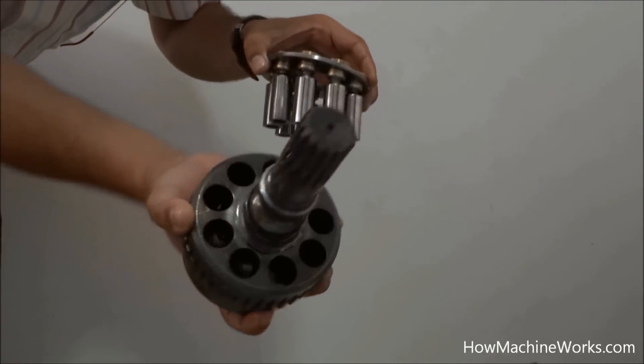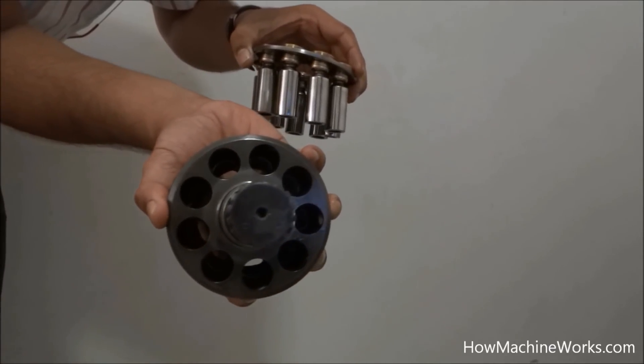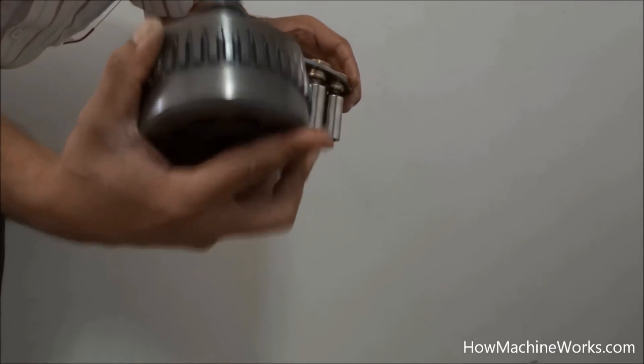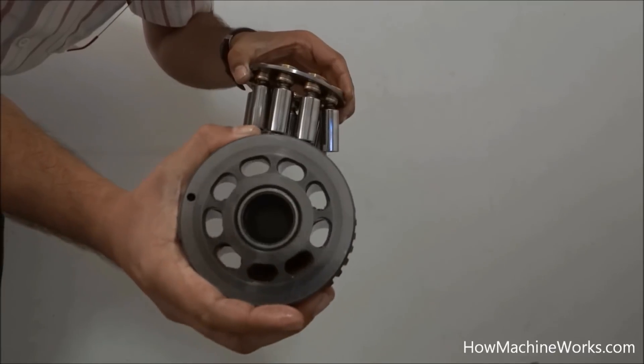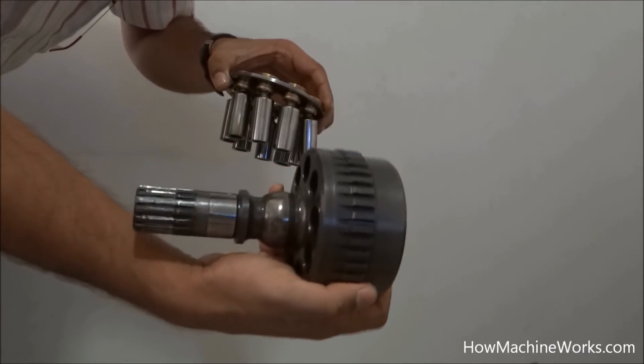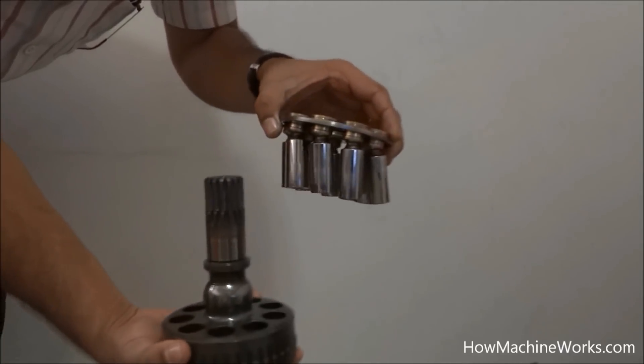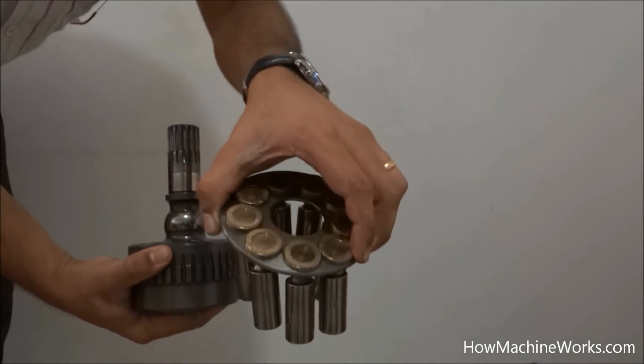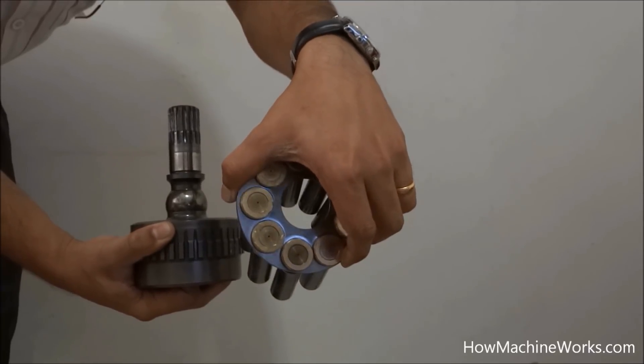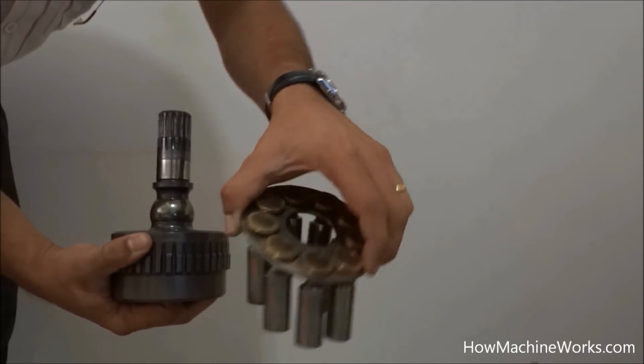Now you can see that the pistons over there which I have shown, and these are the holes where the pistons will actually be inserted. Now you can see the cylinder once again at different angles. Now we will be keeping the piston back into the cylinder block and let's see how it can be assembled back.